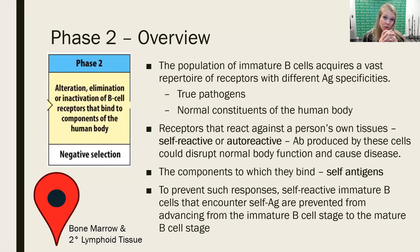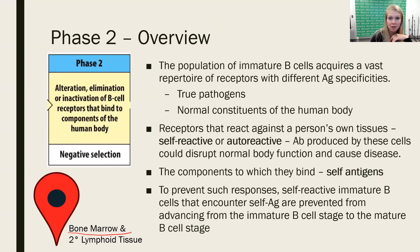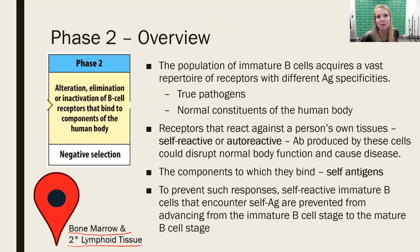Moving on to phase two of B-cell development, which is really the schooling, the education of B-cells. B-cells are educated in the bone marrow. We're looking at the bone marrow primarily, but some of the education — let's call it continuing ed — happens out in the secondary lymphoid tissue.